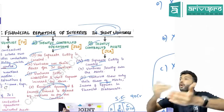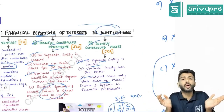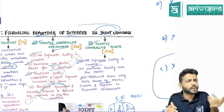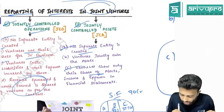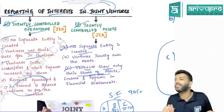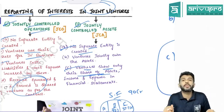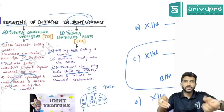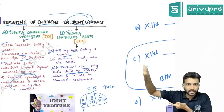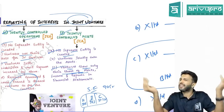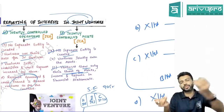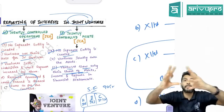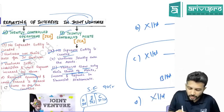To summarize JCA: parties come together not to conduct operations, but to build or develop a shared asset. That asset is shared by all parties in the ratio defined by their agreement — equal or different. Each venturer shows only their share of assets, liabilities, expenses, and income in their financial statements. This is the key difference between JCO and JCA.